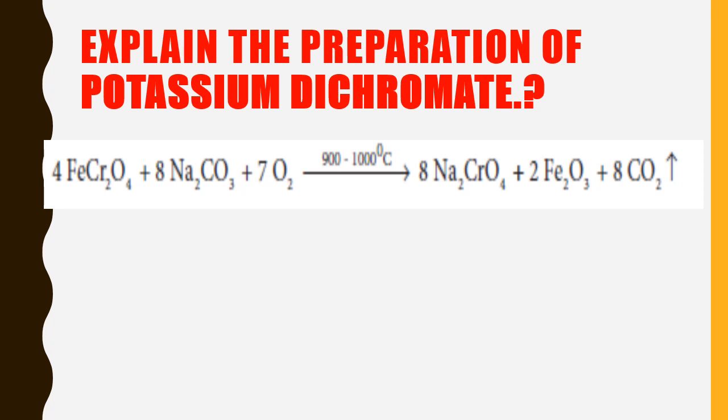The chromate ore reacts with sodium carbonate, which is a white mass. Mostly detergent powder uses sodium carbonate. Here we also add oxygen in the presence of heat, 900 to 1000 degrees Celsius.